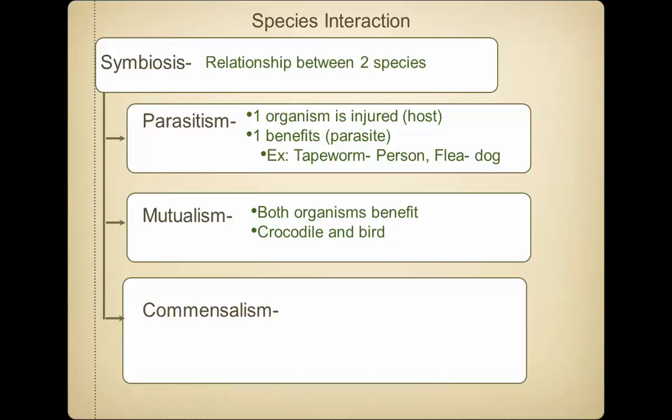The bird benefits by eating little bits of food out of the crocodile's teeth and mouth. The crocodile gets clean teeth — no infections — so it's like an automatic dental floss. They both benefit and have an interest in keeping this relationship. The crocodile doesn't eat the bird; the bird just cleans its teeth. Everything's happy.